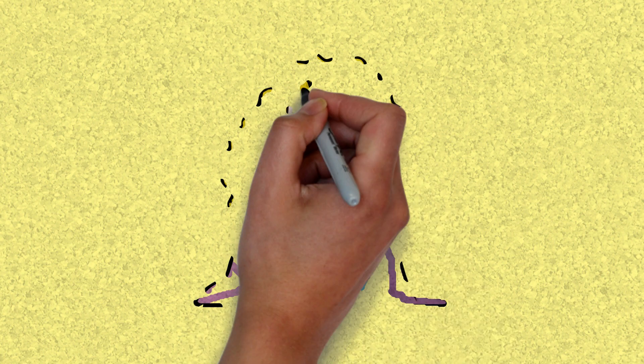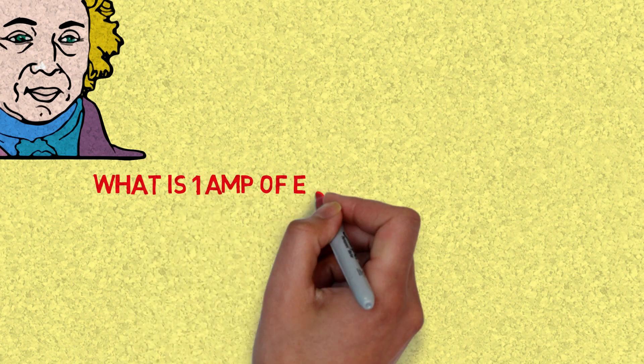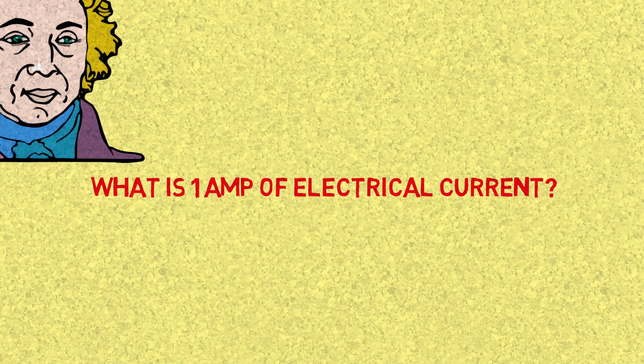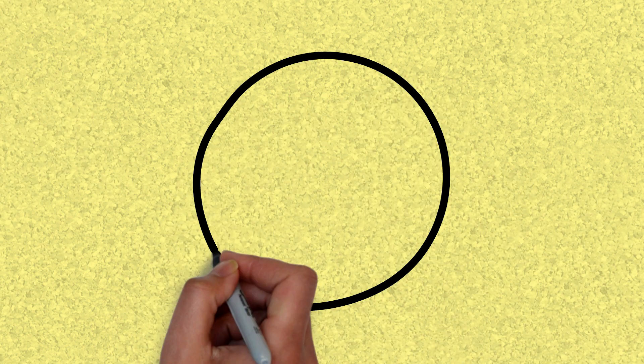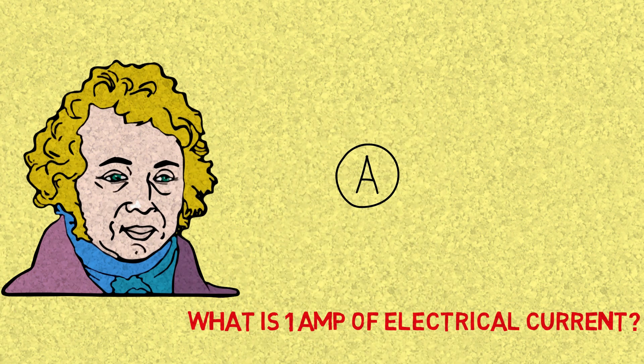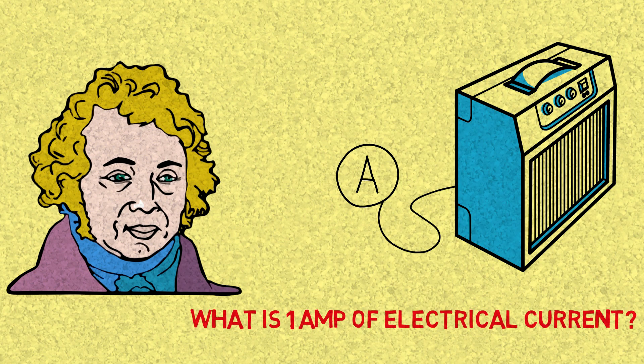Welcome back to my channel. Today we'll look at what amps or amperes are and understand how much electrical current one amp is. As always, I'll explain this in a very simple analogy to get a very conceptual understanding of the unit.